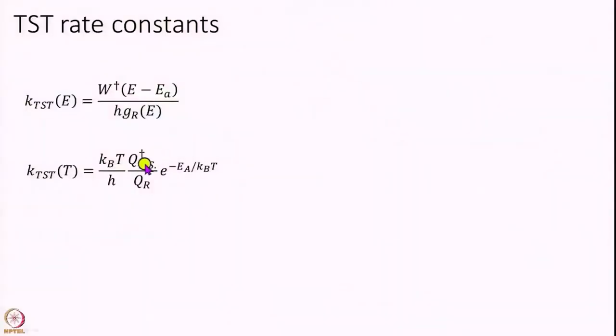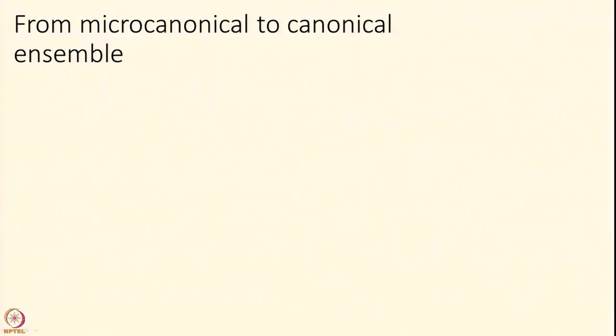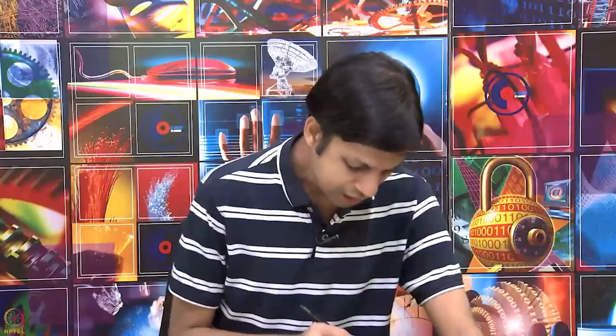In this module I want to connect these two. These are the two expressions we have derived at constant temperature, this is the expression that we have played around with over several modules, and this is the expression we derived in the last module of the rate constant at constant energy. So today let us look if we can derive one from the other. Particularly I will go from microcanonical to canonical.